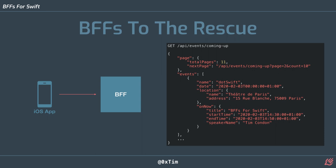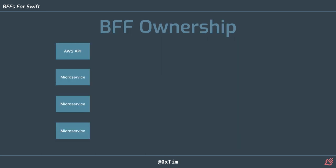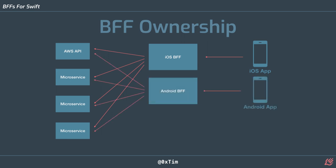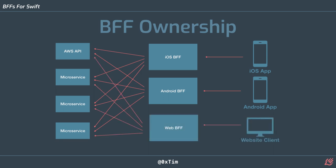Going back to our conference app example, our BFF can just return the data we need in one single GET request to populate the home screen, which will have great improvements for your users. What you end up with is a load of microservices or third-party services, and then an iOS app with its own Backend for Frontend that calls all these different services, an Android app with its own BFF, and a web client app with its own backend — and so on.